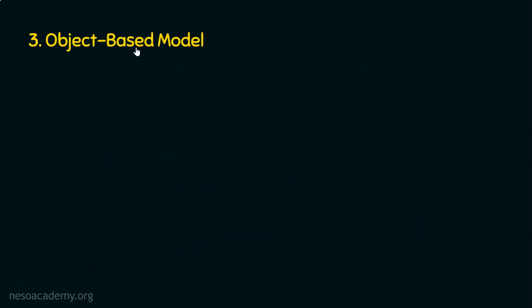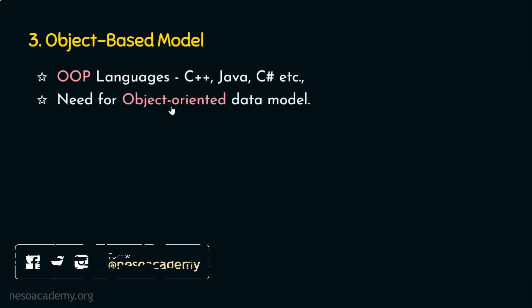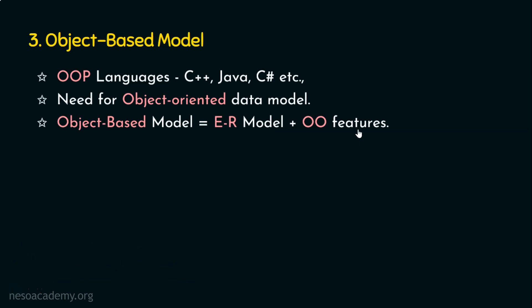Let's now move on to the third data model, the object-based model. We know object-oriented languages like C++, Java, and C#. Suppose the front-end is designed using an object-oriented programming language; we need a back-end that also supports the front-end. So in that case, we are in need of an object-oriented data model. This object-based model is actually using the ER model with object-oriented features like data encapsulation, inheritance, etc.